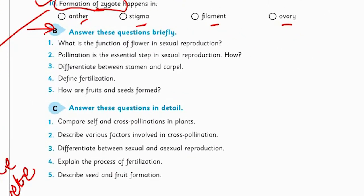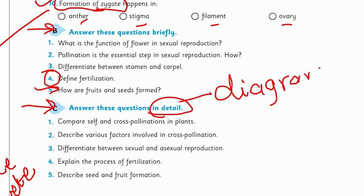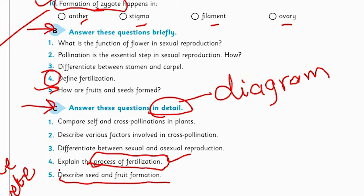Move to Part B: Answer these questions briefly. You will solve question number 4: Define fertilization as a part of sexual reproduction, and describe how fruit and seed are formed in 2 to 3 steps. Then move to Part C, which requires detailed answers with diagrams. Solve question number 4: Explain the process of fertilization, supported by a well-labeled diagram. Then question number 5: Describe seed and fruit formation, also supported by well-labeled, neat diagrams.